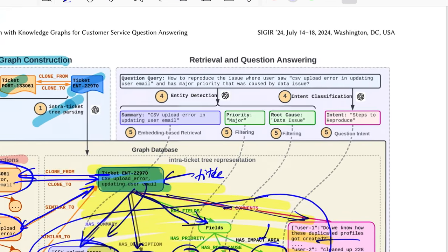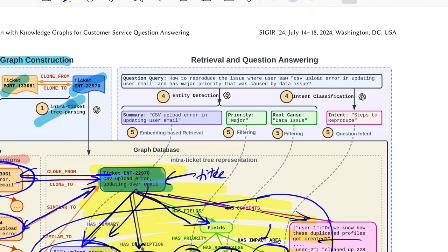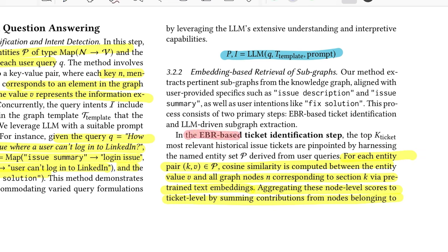Now comes the second part which is retrieval and question answering. If somebody asks this question, let's say how to reproduce the issue where users saw CSV upload error in updating user email and has major priority that was caused by data issue, they have essentially two steps that they apply for parsing these user queries. The first is the intent detection step, the second is the intent classification or intent generation step. The first thing they do is for extracting these entities and intents they use large language model and give out the similar YAML and ask it to extract if possible the values against each of these keys like summary, priority, root cause mentioned in the user query.